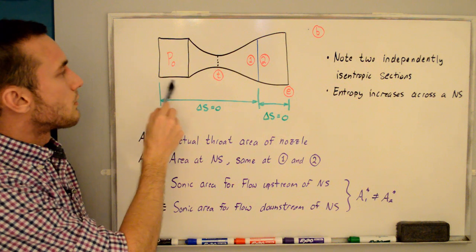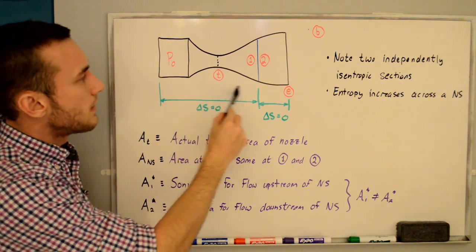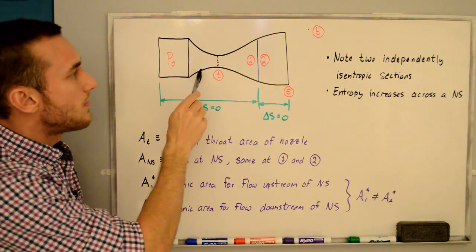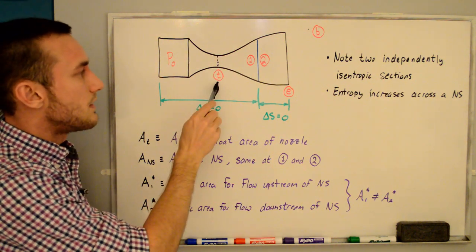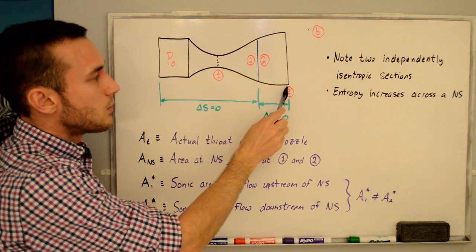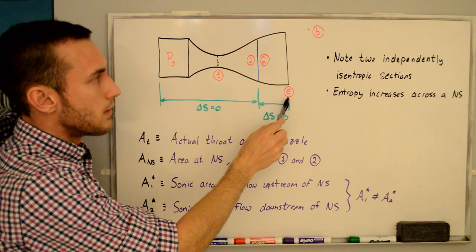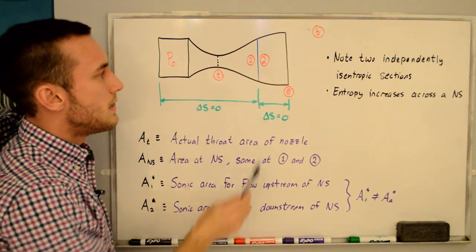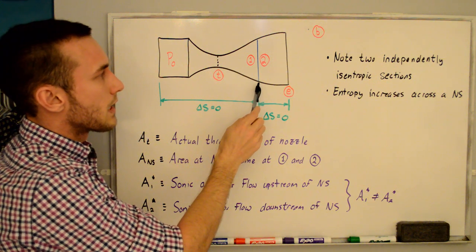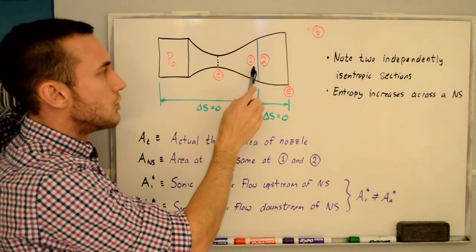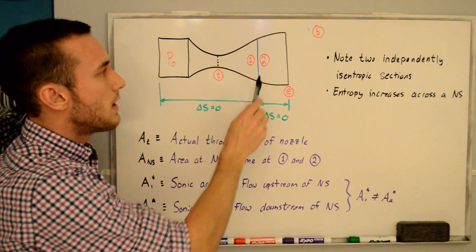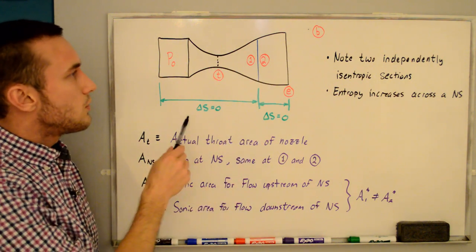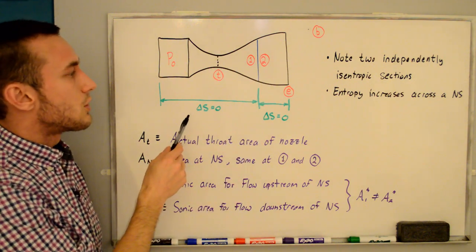Let's look at a schematic of the converging-diverging nozzle. We have the reservoir, converging section, and diverging section. In the reservoir we have stagnation pressure P-naught. At the minimum area we have state T for throat, at the exit we have state E, exhausting into the atmosphere called state B. In blue we have the normal shock, with state 1 just upstream and state 2 just downstream.